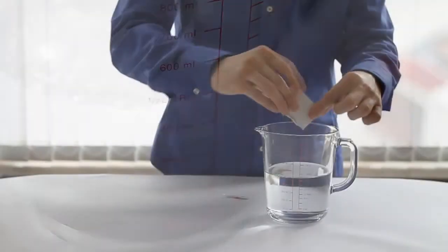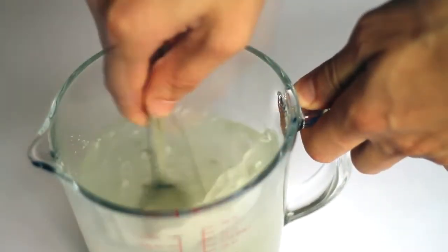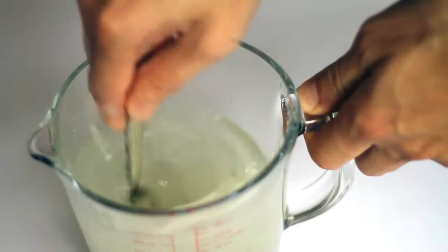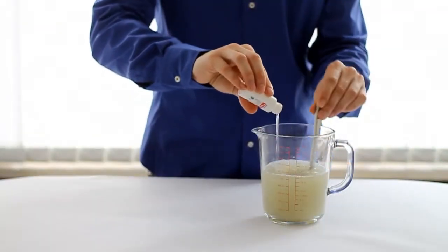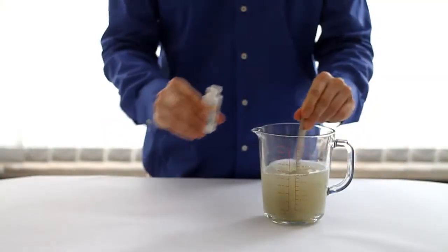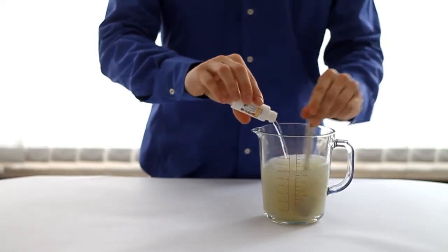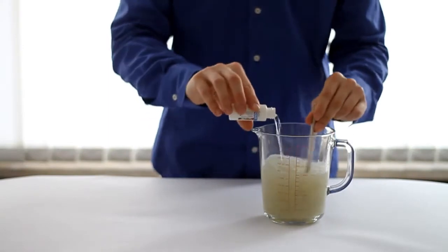Then add the contents of sachet 1 into the water. Stir well to ensure all the powder becomes wet. Next, add the contents of bottle 2 into the water and stir well. Once you have done this, add the contents of bottle 3 into the water as well and stir.